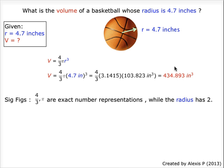The next step is to put this value into significant figure form. 4 over 3 and pi are exact number representations, while the radius only has two significant figures, 4 and 7.